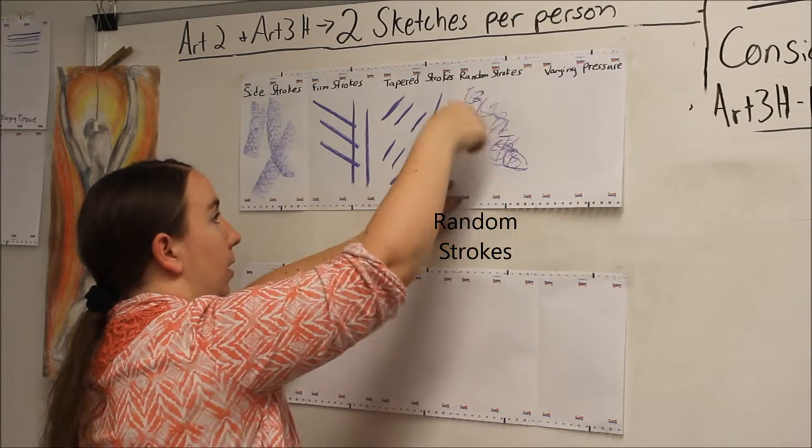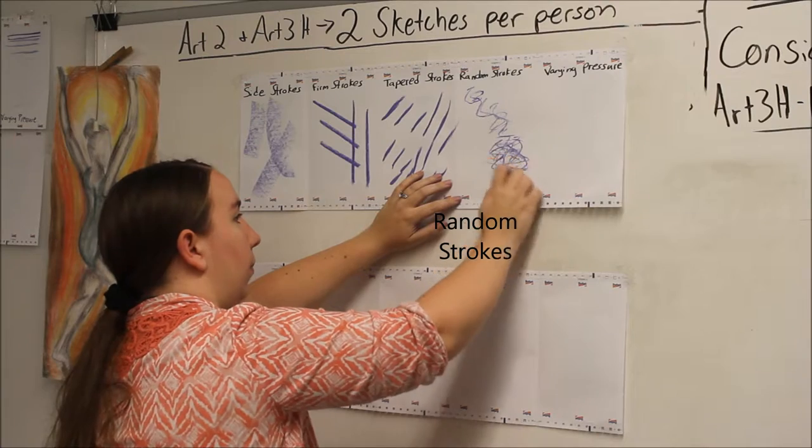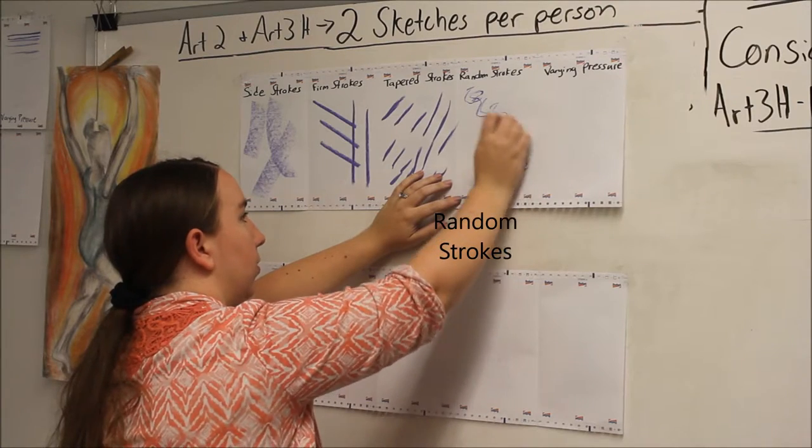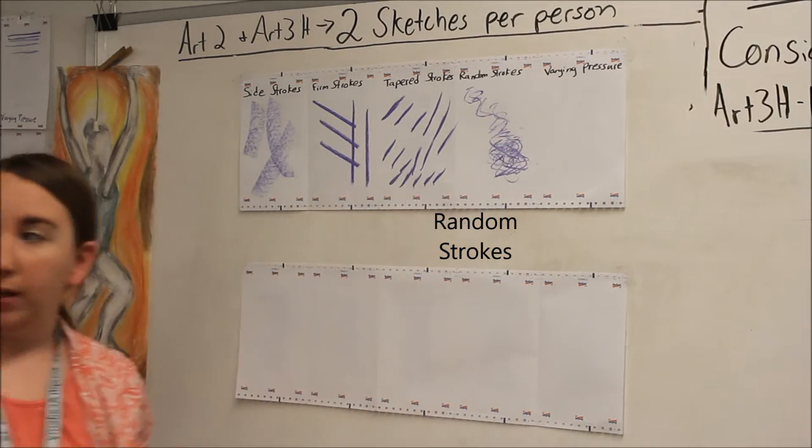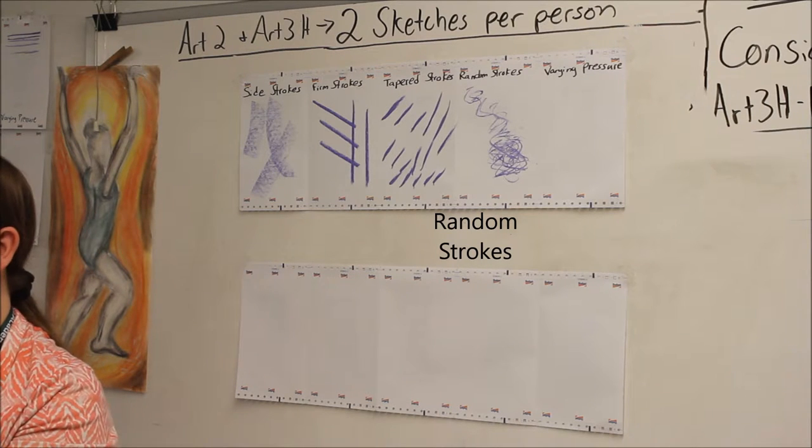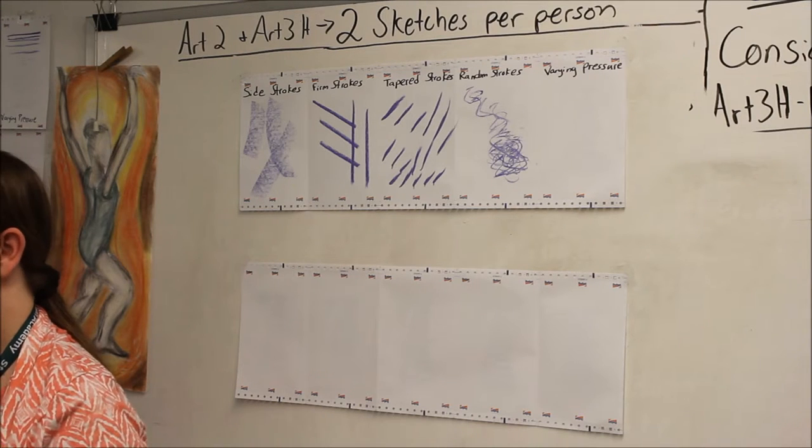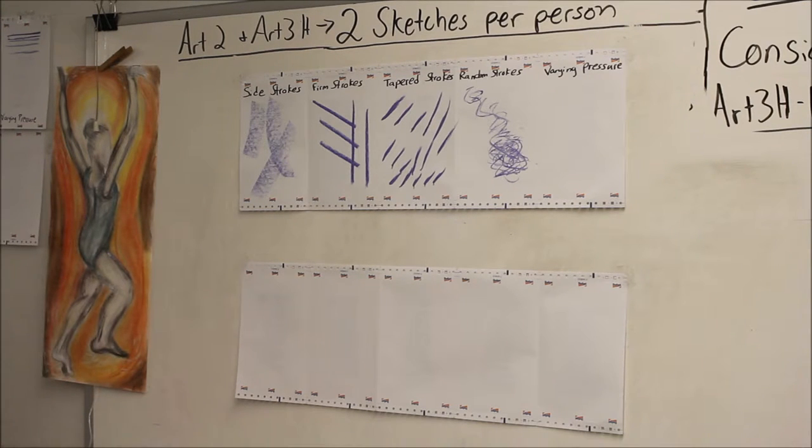Try to do some areas lighter and some areas more condensed. And that can kind of give you that scumbling effect. You guys remember scumbling where denser lines are darker and further apart gives lighter value. It also gives it an interesting texture as well. So go ahead and make sure you've got a darker area and a lighter area as well as that scumbling effect.